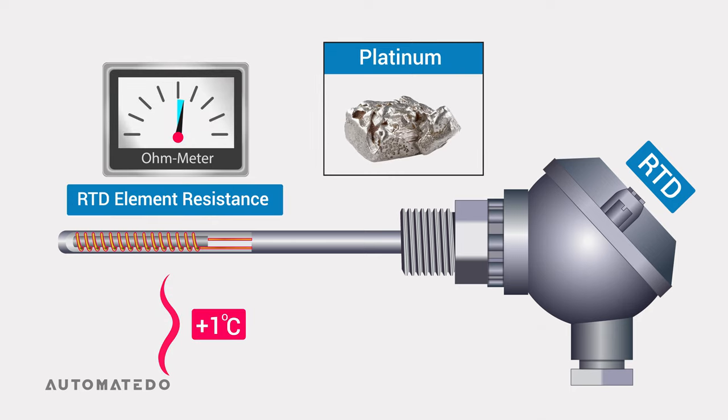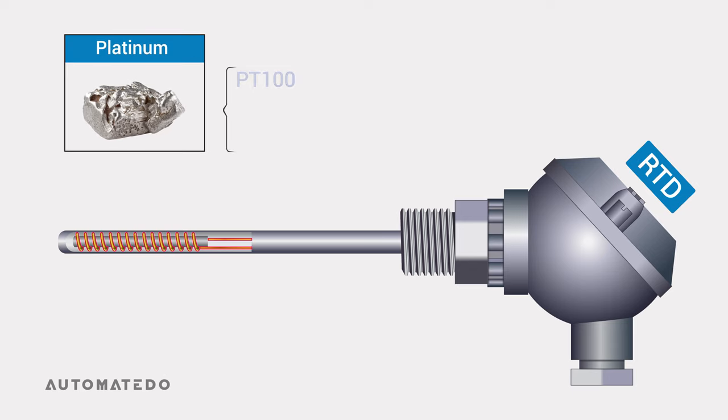Third, platinum has high resistivity, meaning its resistance varies significantly with each temperature change. So an RTD sensor can be made using only a minimum volume of platinum. There are various types of RTD elements made of platinum.